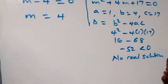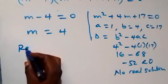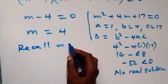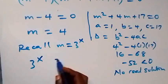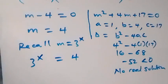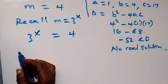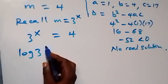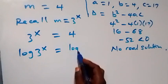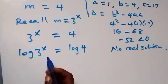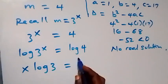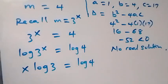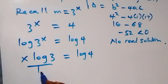Recalling that m equals 3 raised to power x, we have 3 raised to power x equals 4. Taking the log on both sides: log of 3 raised to power x equals log 4. By the power law of logarithms, x comes to the front, giving x times log 3 equals log 4. Dividing both sides by log 3: